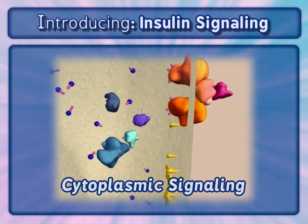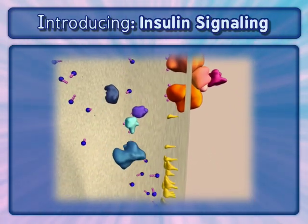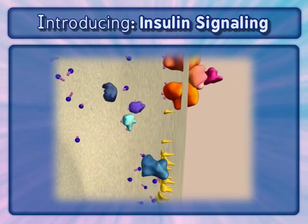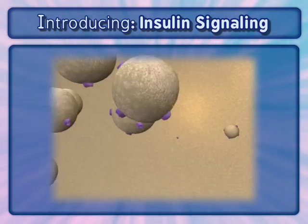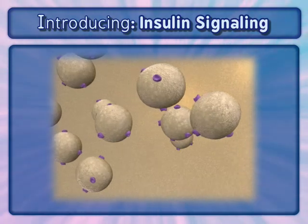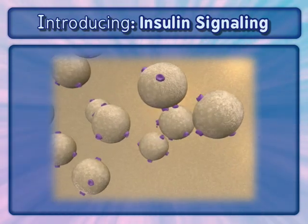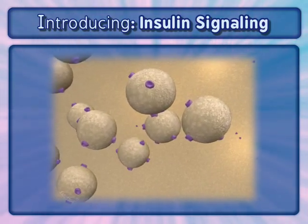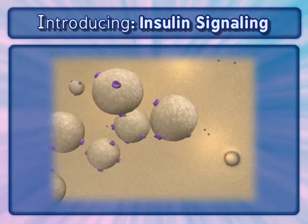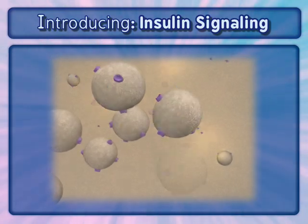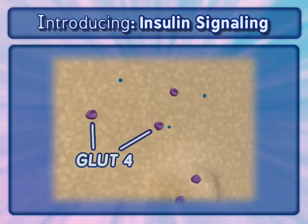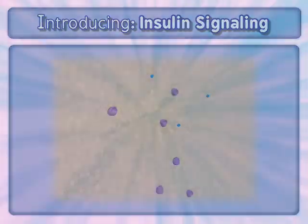In the protein recycling animation, we see a group of storage vesicles enriched with GLUT4 proteins continuously recycling from the cell membrane to an inactive location in the cytosol. GLUT4 is a protein that facilitates the movement of glucose into the cell.